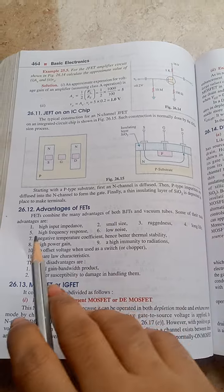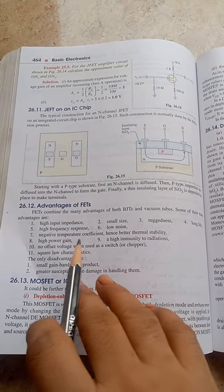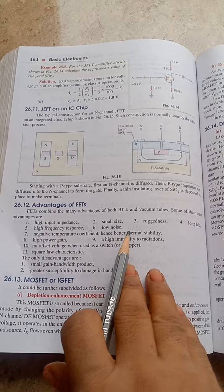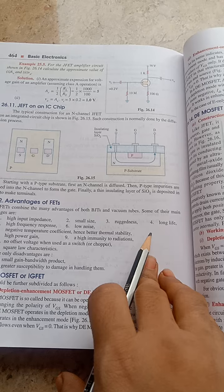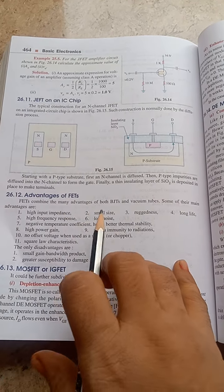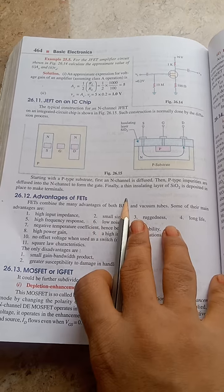It has three terminals: gate, drain, source. You have to know solid state devices. Field effect transistor has many advantages of both BJTs and vacuum tubes. Some of their main advantages are high input impedance because of field effect transistor.